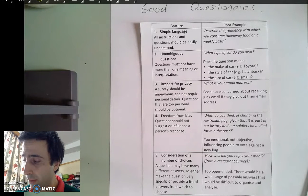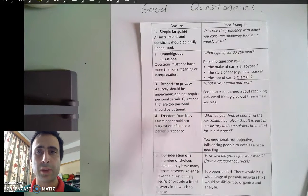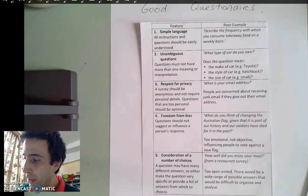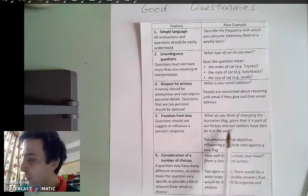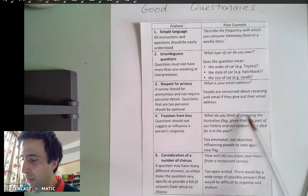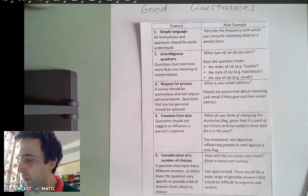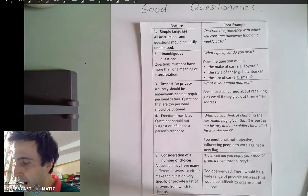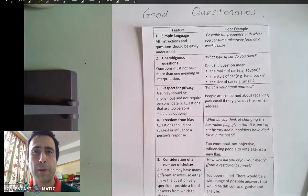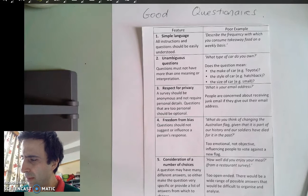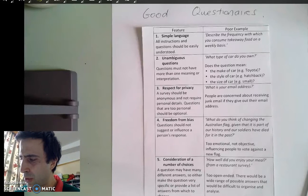Freedom from bias is one of those things that bias is very difficult for some people to understand. If you look at 'what do you think of changing the Australian flag given that it's part of our history and our soldiers have died for it in the past?' By reading that, you get the impression that the person asking really doesn't want to change the flag because they're using very emotive language. Even if you don't consciously know it, it puts these ideas in your head that make it a poor choice to change the flag.